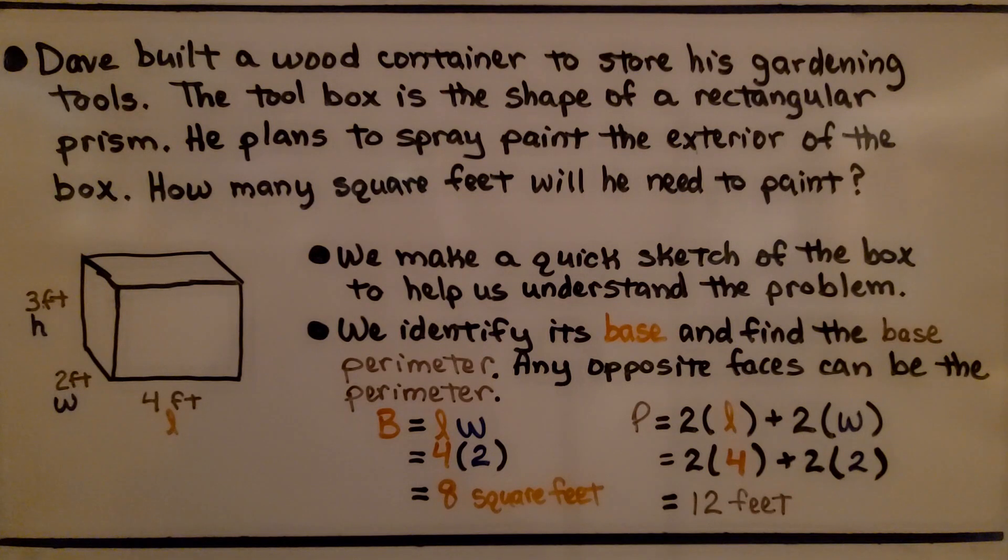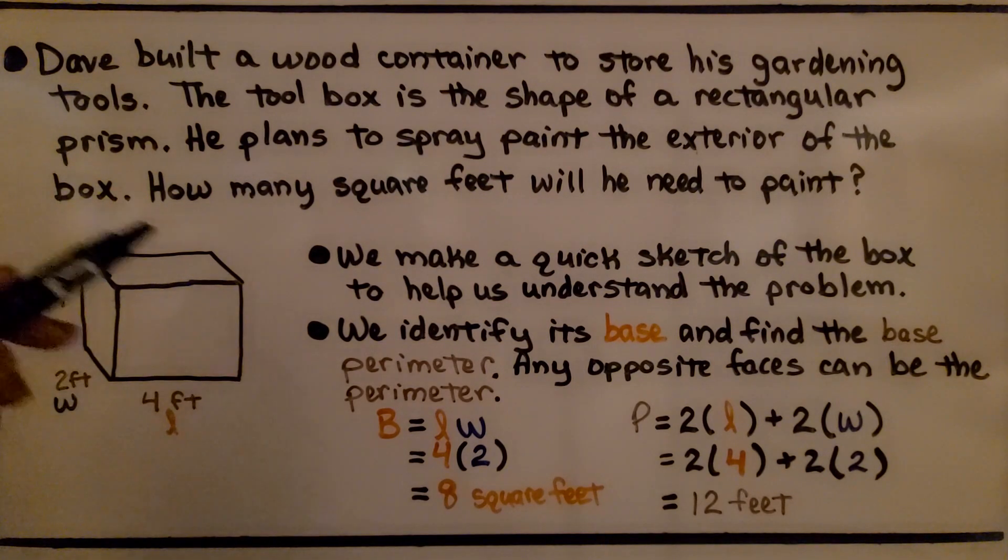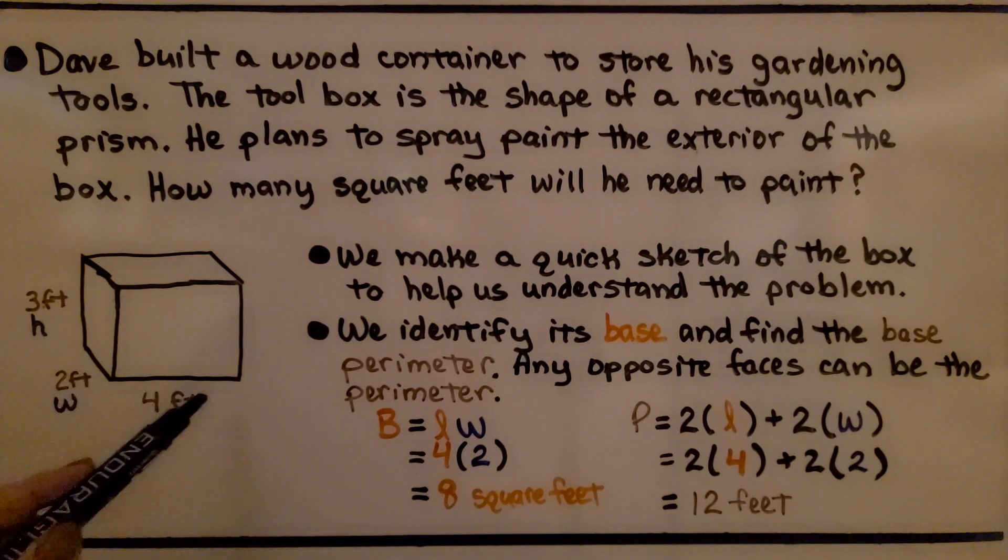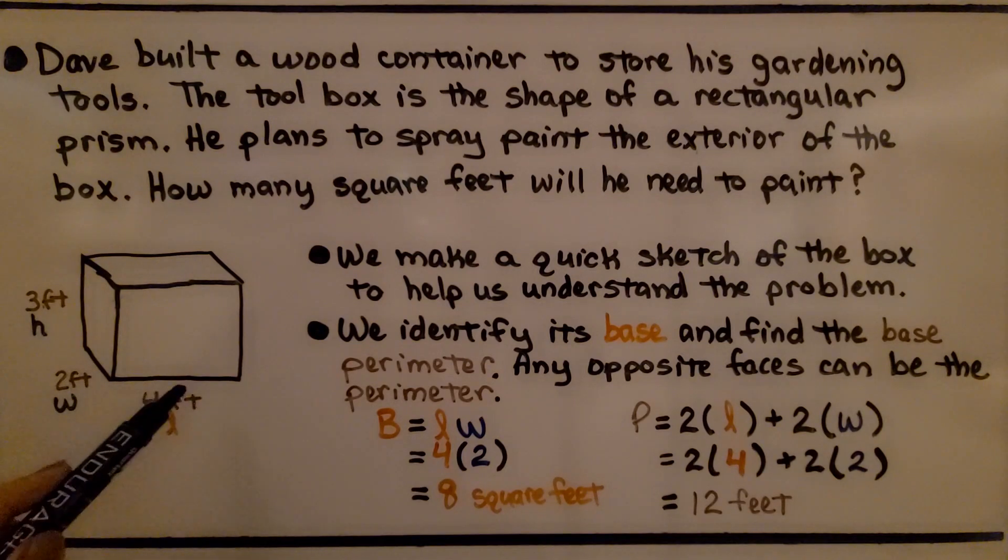Dave built a wood container to store his gardening tools. The toolbox is the shape of a rectangular prism. He plans to spray paint the exterior of the box. How many square feet will he need to paint? We make a quick sketch of the box to help us understand the problem. We identify its base down here, what it's sitting on.